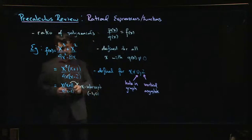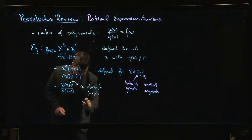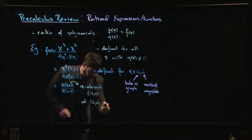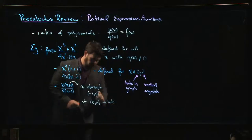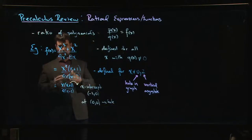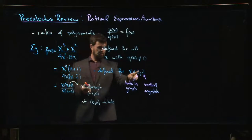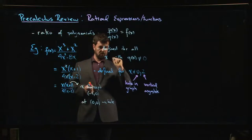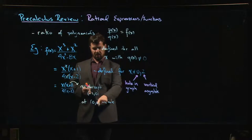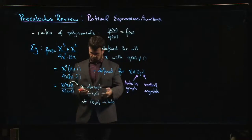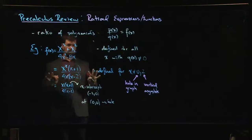At (0,0) we would have an intercept there - it would be both the x and the y intercept, except our original expression was not defined at 0. So instead of getting an intercept there, that's where we have this hole.